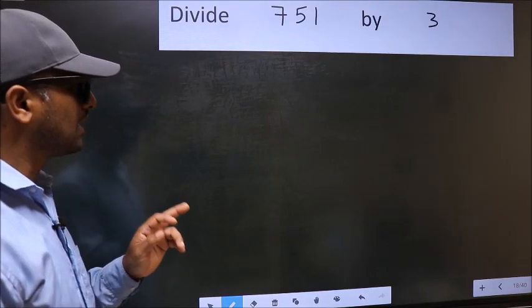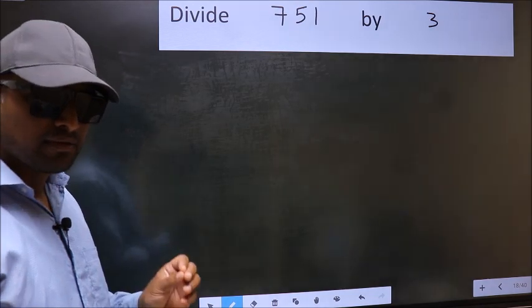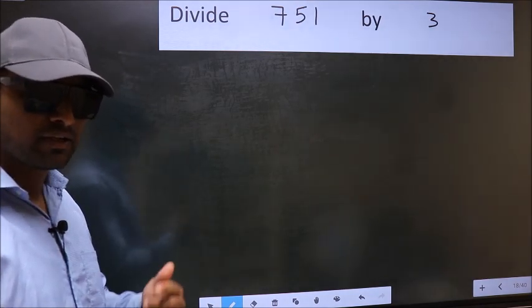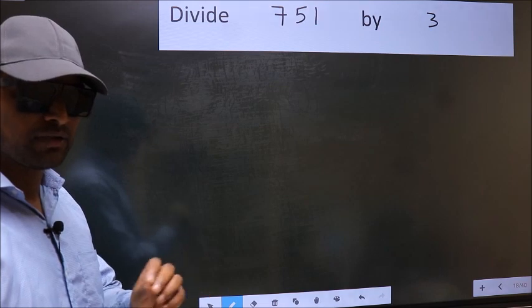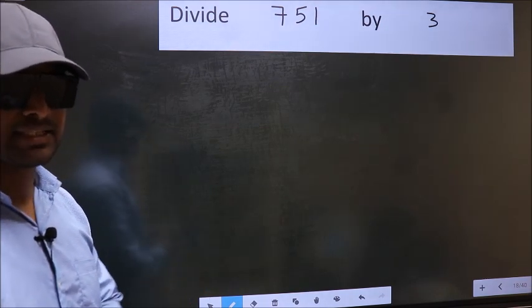Divide 751 by 3. While doing this division, many do this mistake. What is the mistake that they do? I will let you know. But before that, we should frame it in this way.